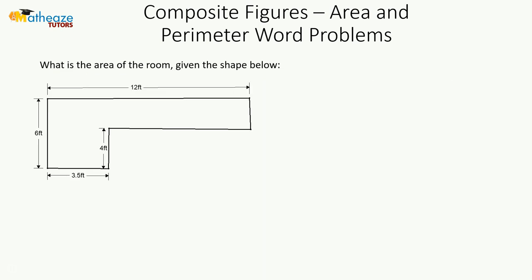Let's look at an example and start walking through some word problems. The first problem asks: what is the area of the room given the shape below? To get the area of a composite figure we have two choices. We will break up this figure into two different shapes.